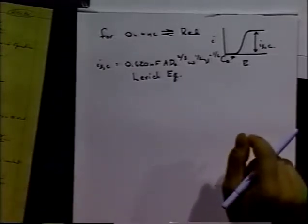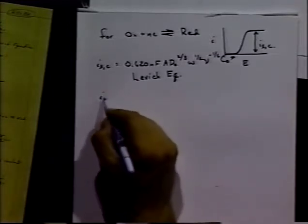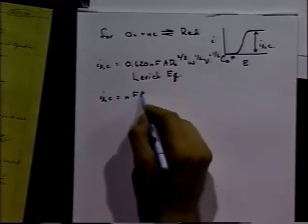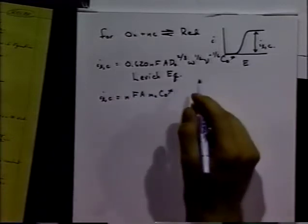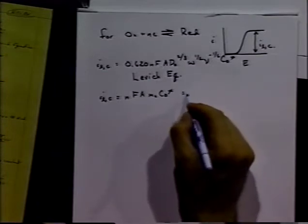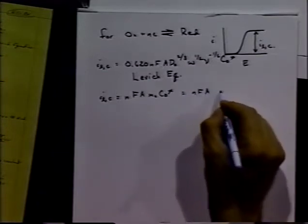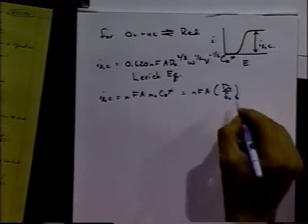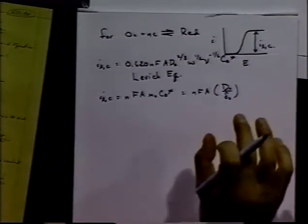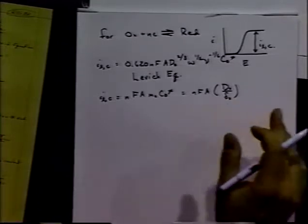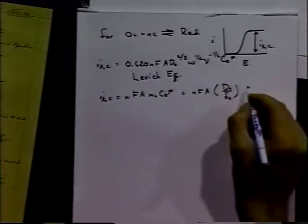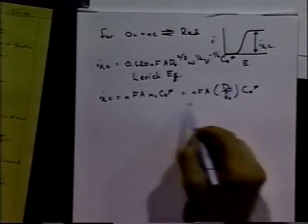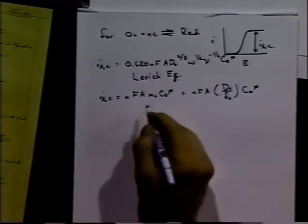Remember in the first chapter we talked about limiting currents. We said we can have a limiting current for a steady state curve as NFA times M0, the concentration of O in the bulk. We can approximate that using the Nernst approximation where we said there was a Nernst diffusion layer thickness. Within that thickness, diffusion takes place; outside that thickness the concentration stays constant.